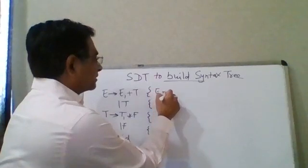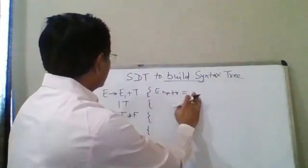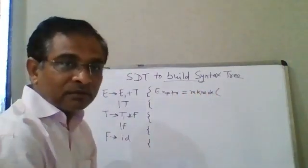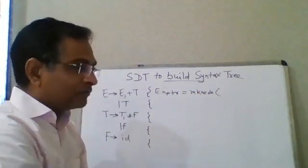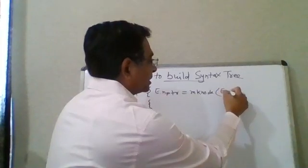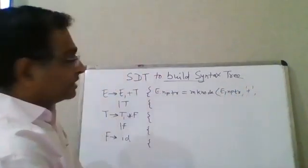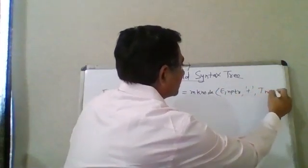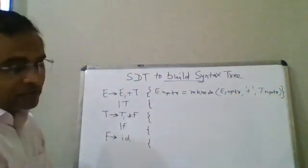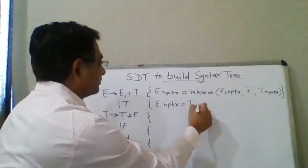So E dot nptr is equal to make_node, which creates a doubly linked list node with a left pointer, a right pointer, and a value in between. For the production E → E1 plus T, it creates a node with E1 dot nptr on the left, the operator plus in between, and T dot nptr on the right. For E → T, E dot nptr is simply equal to T dot nptr.